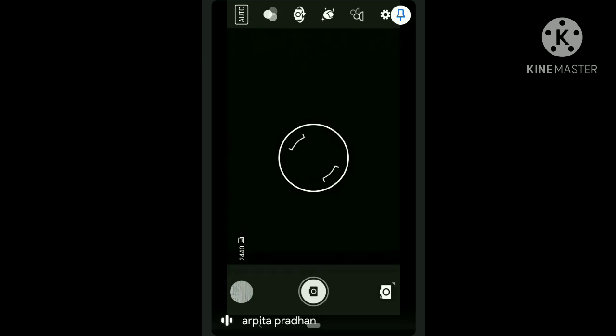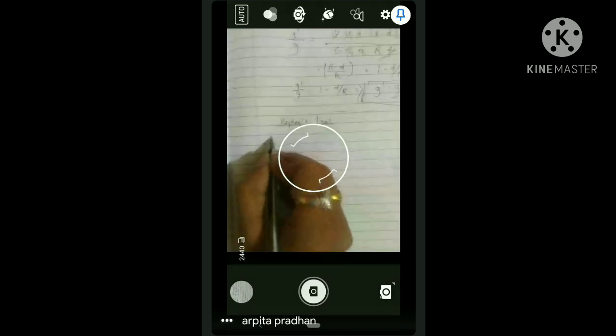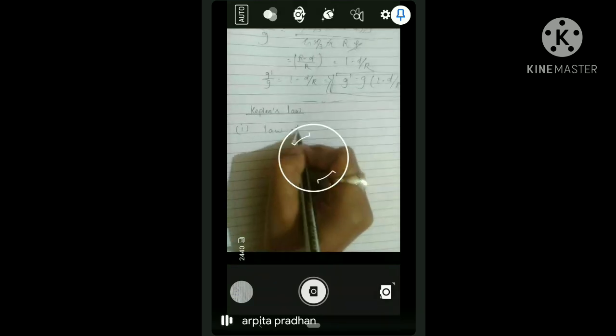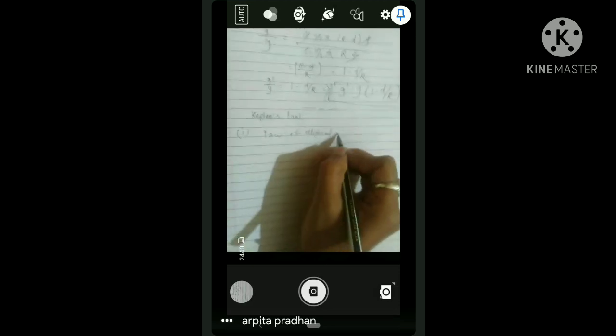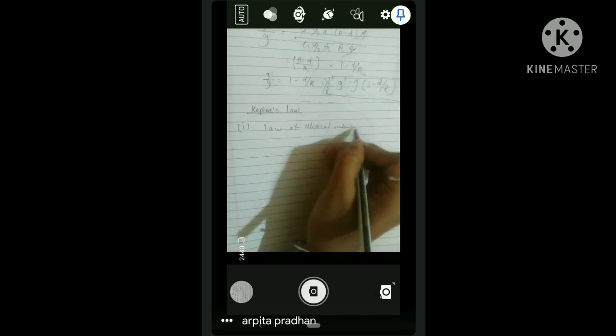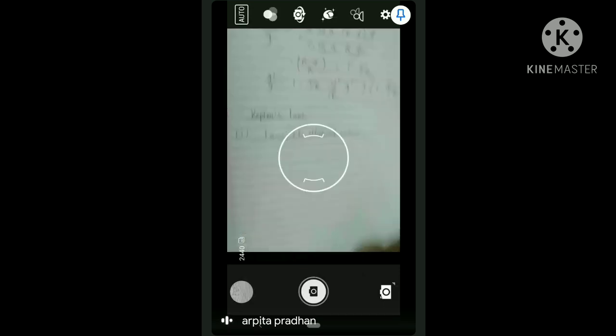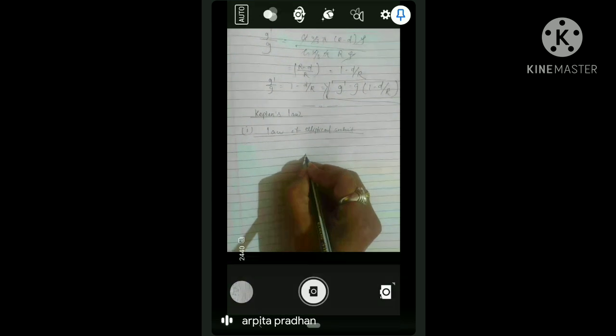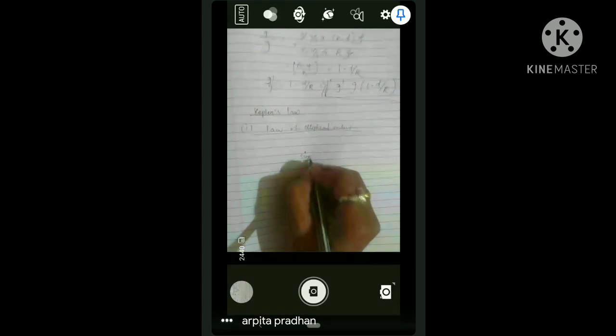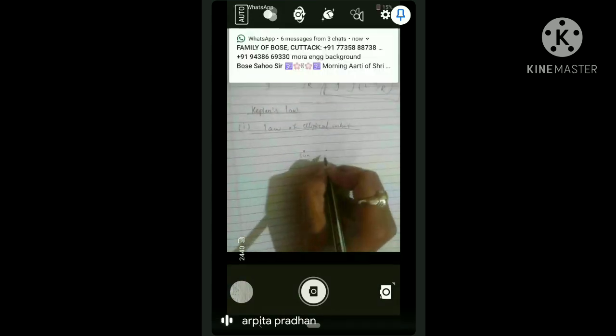The idea of Kepler was 1609. The first topic is law of elliptical orbit.